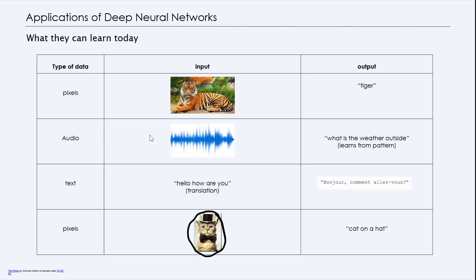Let's think about what we can use deep neural networks for today. What they can learn today is from types of data like pixels. They can get input of an image, which is a bunch of pixels, and then the output would be the identification of what's in this image. This requires the neural network to understand the shapes and other kinds of hidden features that make up a tiger.